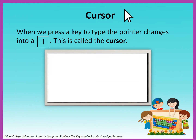Cursor. Have you seen this arrow on your computer screen? This is called a cursor. When we press a key to type, the pointer changes into the cursor. Let's see what is happening here.